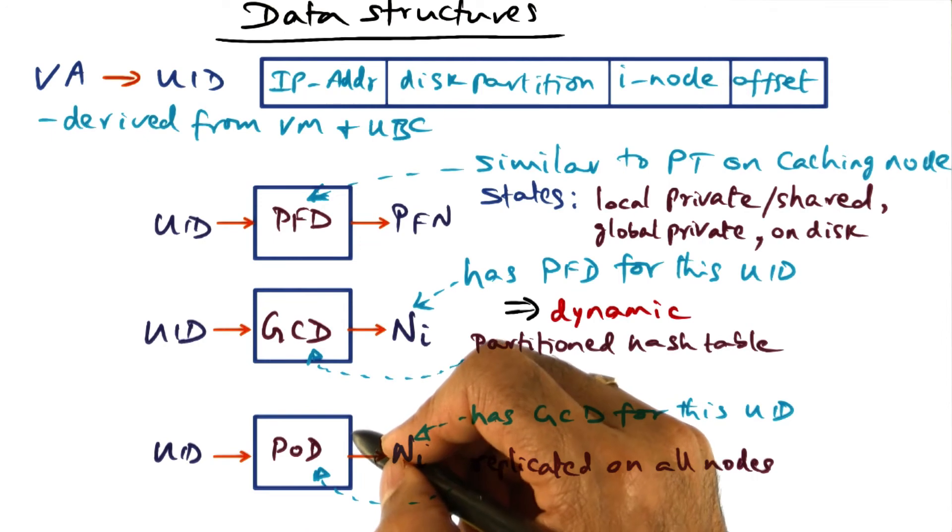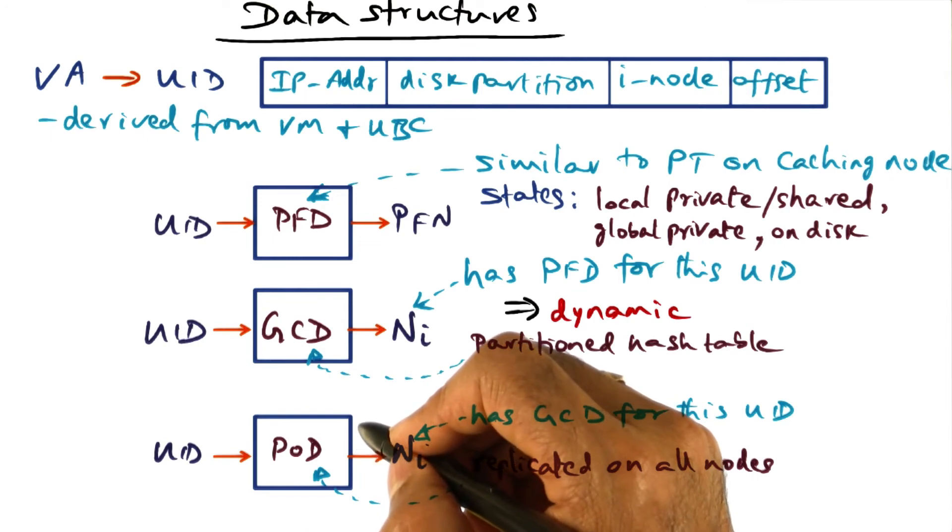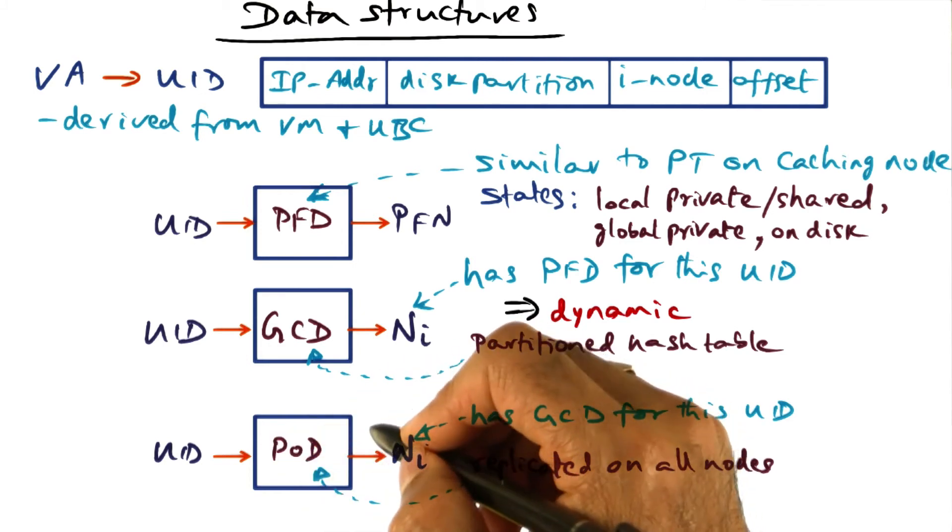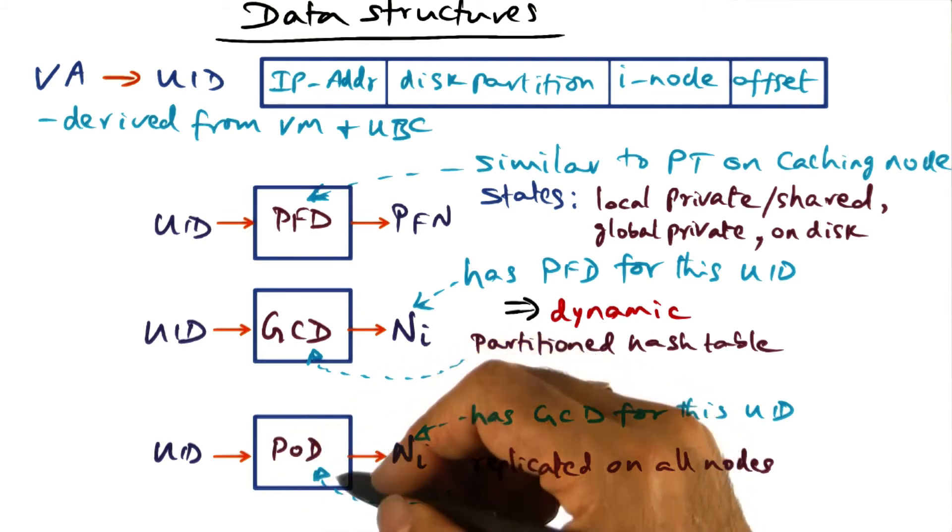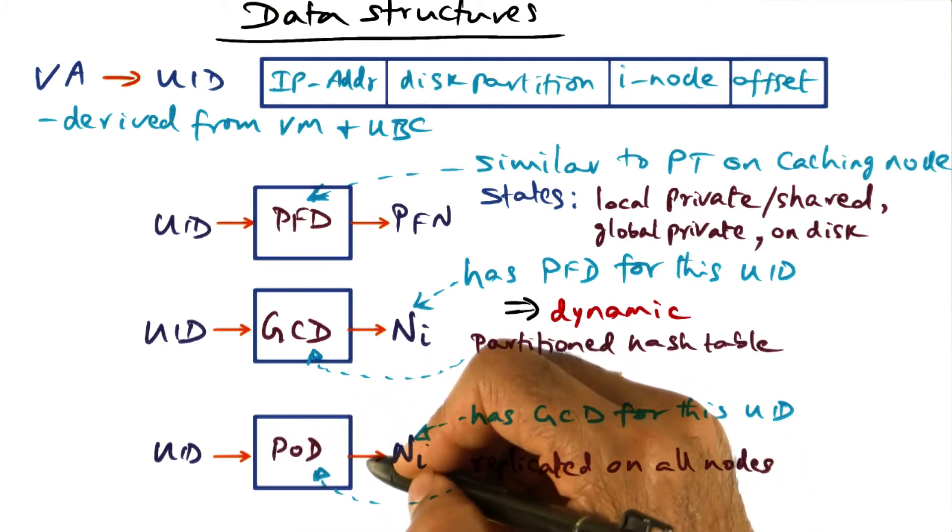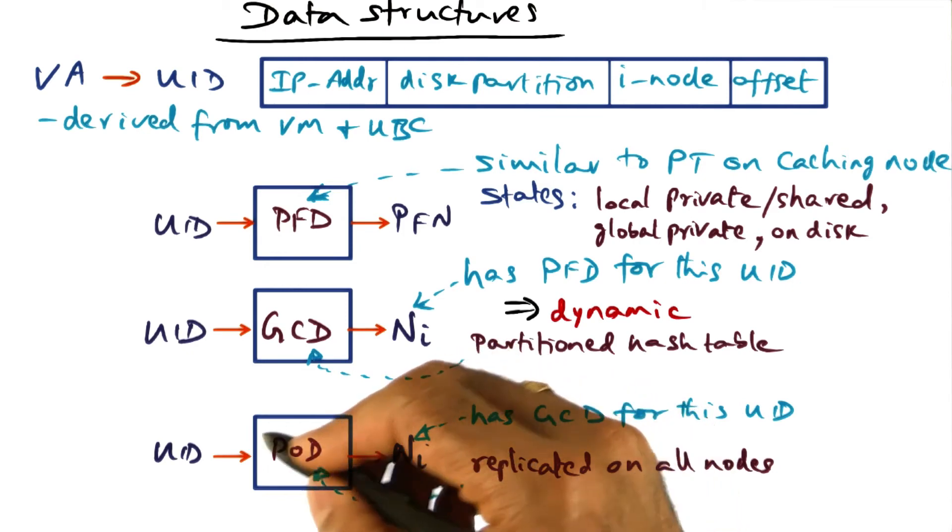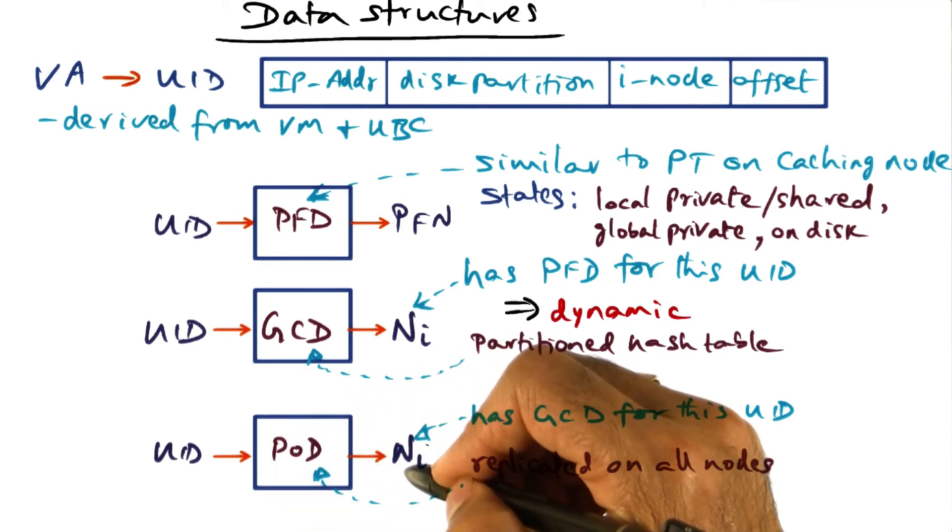Now if the LAN never evolves, or in other words, a set of nodes on the LAN is fixed, then the page ownership directory also remains the same. But if new nodes are added and deleted and so on, that's when the page ownership directory is going to change.